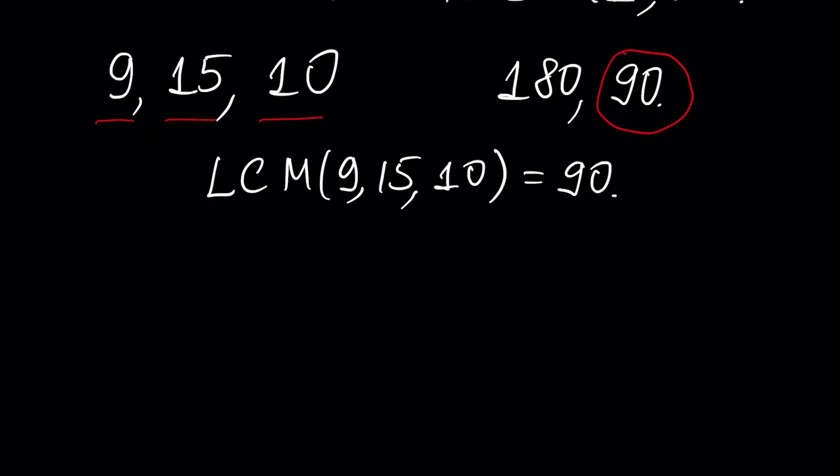For small numbers, LCM can be found by simple inspection. But for big numbers, LCM is equal to the multiplication of each factor in prime number factorization that appears in any factorization, with the maximum exponent in each factorization. To make it clear, let's give examples.